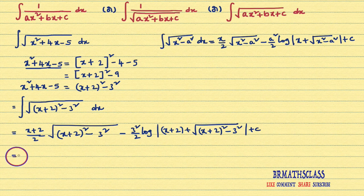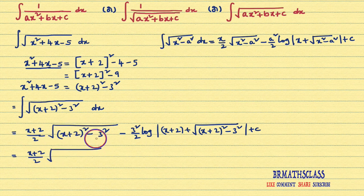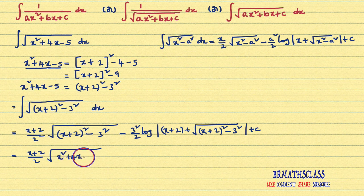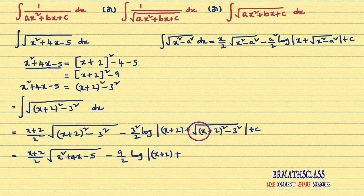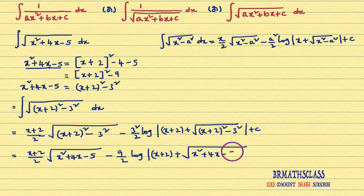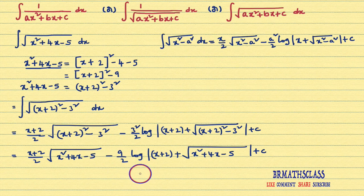If you simplify this further, you get: (x plus 2) divided by 2 into square root of x² plus 4x minus 5, minus 9 by 2 into log mod of (x plus 2) plus square root of x² plus 4x minus 5, plus c. Actually, these problems are easy. A little bit of practice is needed. If you practice 4 to 5 problems continuously, you will find that this model is very easy.